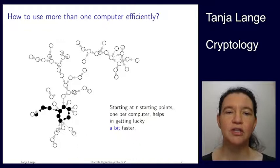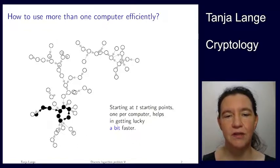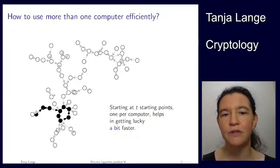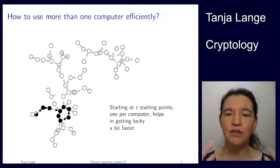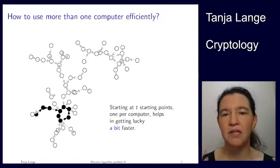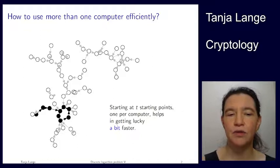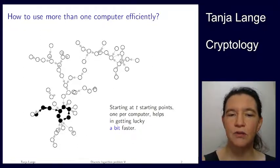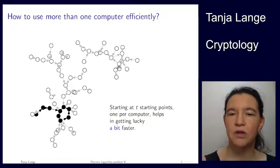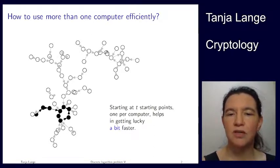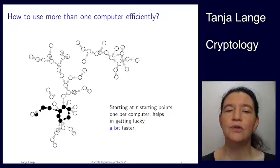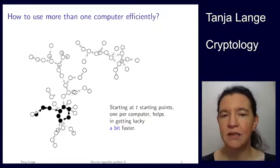Here again is the picture from the explanation of the Floyd cycle-finding method, or general random walks. If you throw a bunch of computers at it — say we have two different computers — this is the first computer which does its walk here. You might have another computer which starts over here and hits this tiny cycle, or another which ends up entering this cycle. You can get lucky and hit a smaller cycle or a shorter tail.